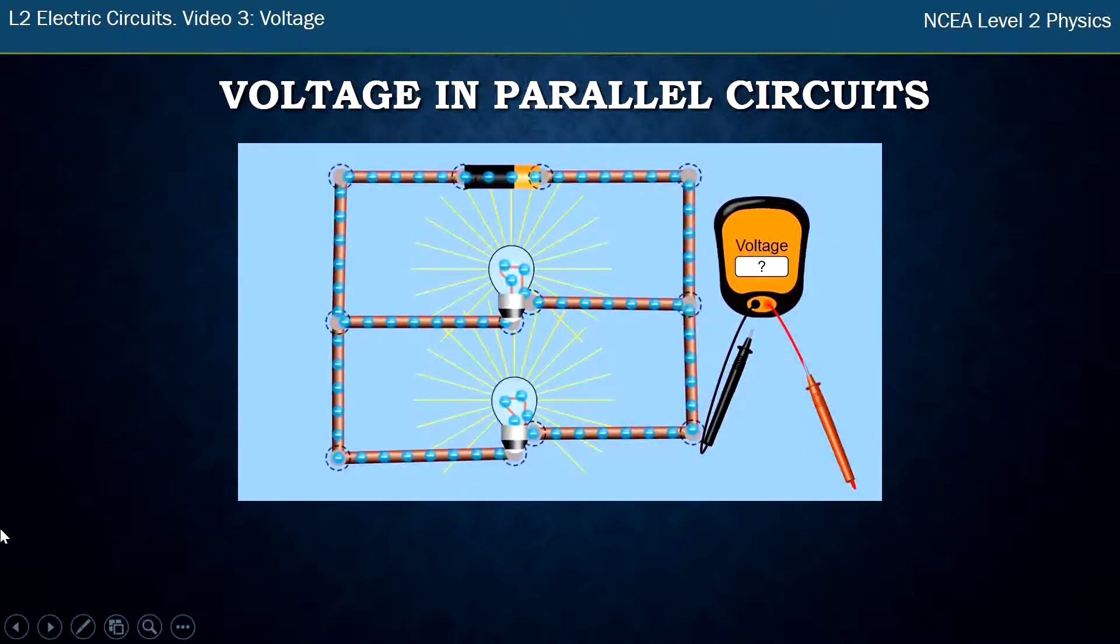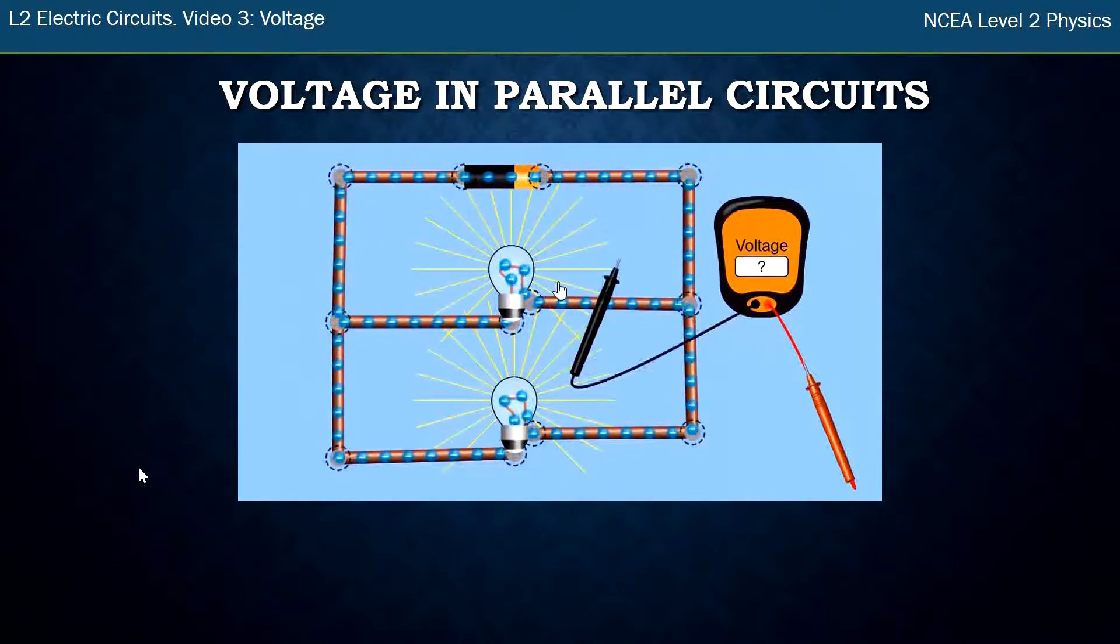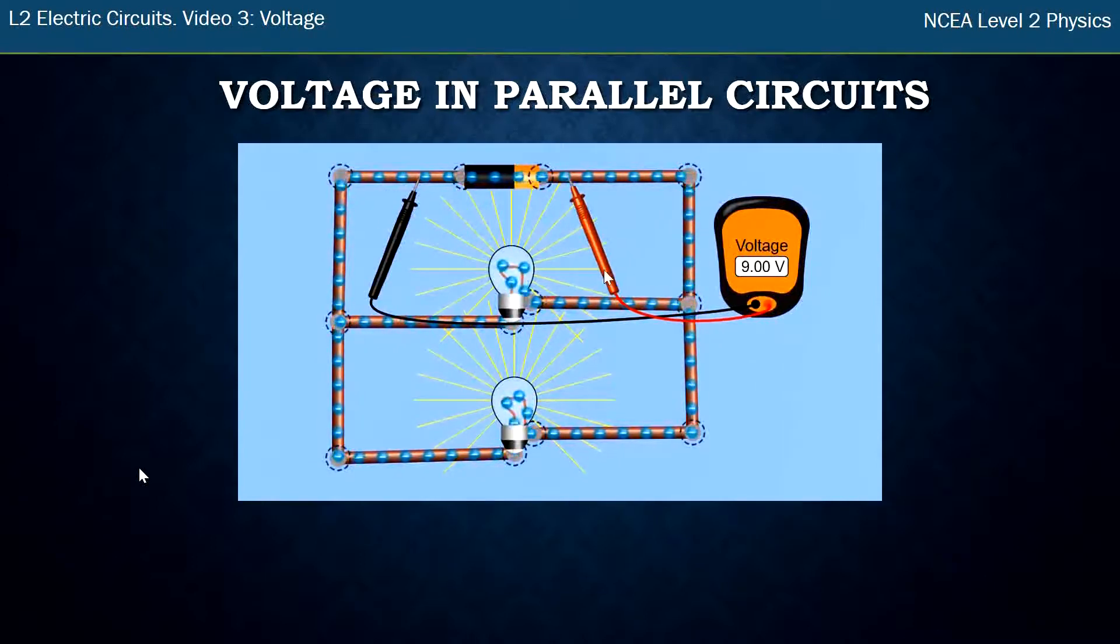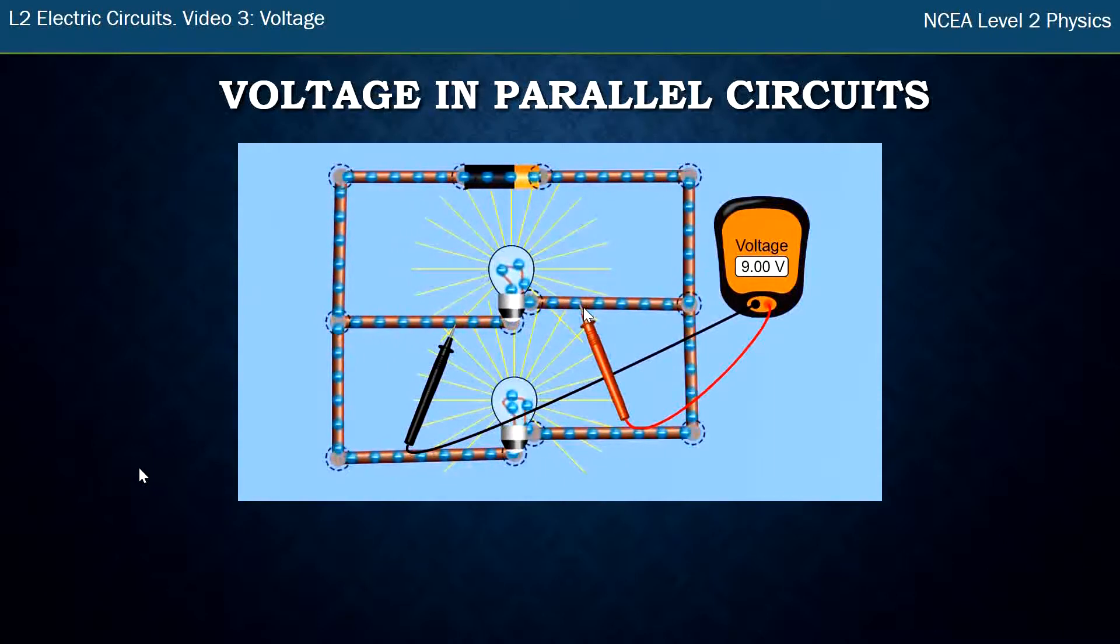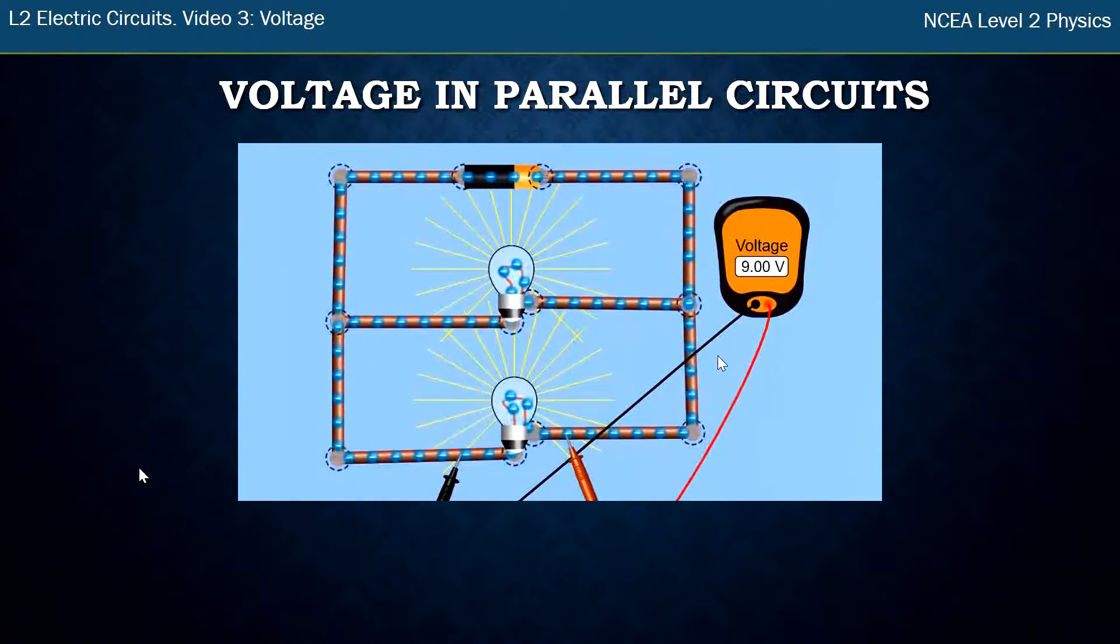In a parallel circuit, we have electrons coming out of the battery and then flowing through one or two bulbs. We can measure the battery again. Same battery should be nine volts. Yep. And if we measure each bulb individually, we see that there's nine volts on one bulb, and on the other bulb, still nine volts.